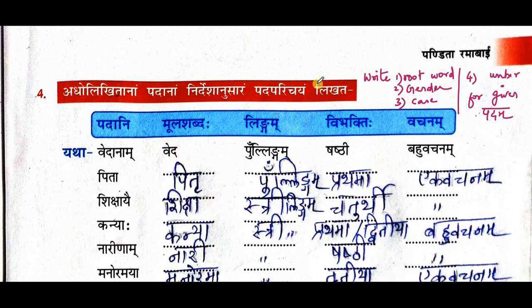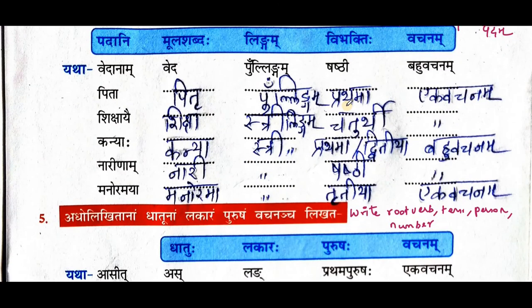Now let us move on to fourth question. Here a padam is given and we are asked to write the root word, gender, case, and number. They gave an example: vedana — for this padam, the mula shabda is veda, the gender is pullinga, the vibhakti is shashthi, and the vachanam is bahuvachana. Likewise we have to do for the rest of the words.